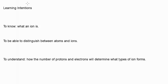In this video, I'll focus on what an ion is, and to be able to distinguish — which means to tell apart — atoms and ions. So how are atoms and ions different? I also want to show you how the number of protons and electrons will determine what type of ion forms.